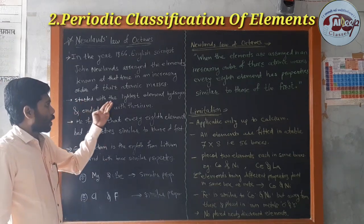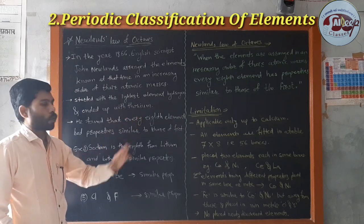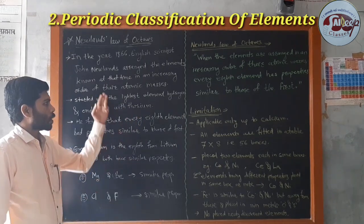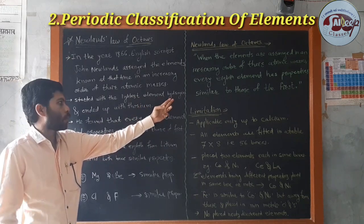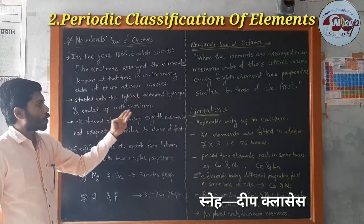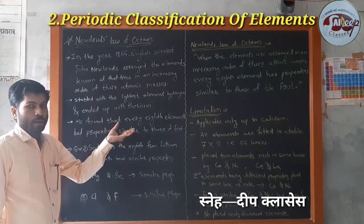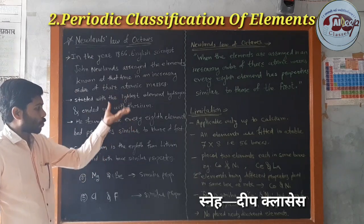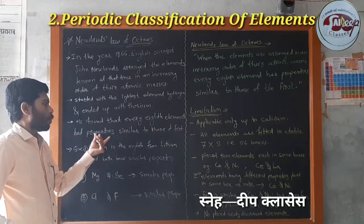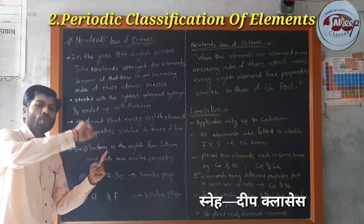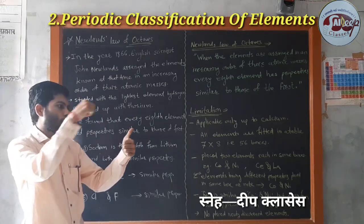Newlands started with the lightest element hydrogen and ended with thorium. He found that every eighth element had properties similar to those of the first — the eighth element is similar to the first.